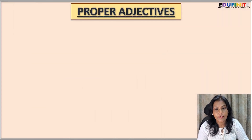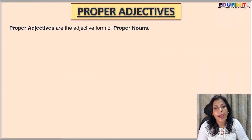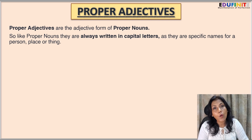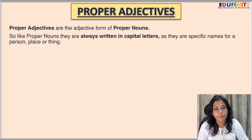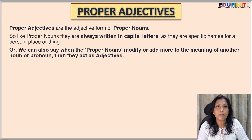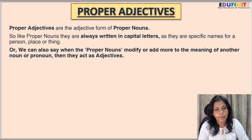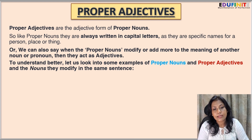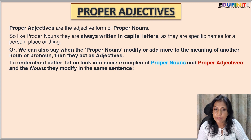Now, proper adjectives. Proper adjectives are the adjective form of proper nouns. They are always written in capital letters as they are specific names for a person, place, or thing. When proper nouns modify or add more to the meaning of another noun or pronoun, they act as adjectives. Let us look into some examples of proper nouns and proper adjectives and the nouns they modify.